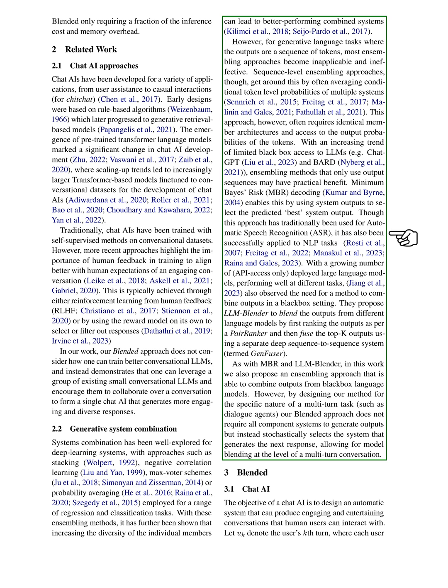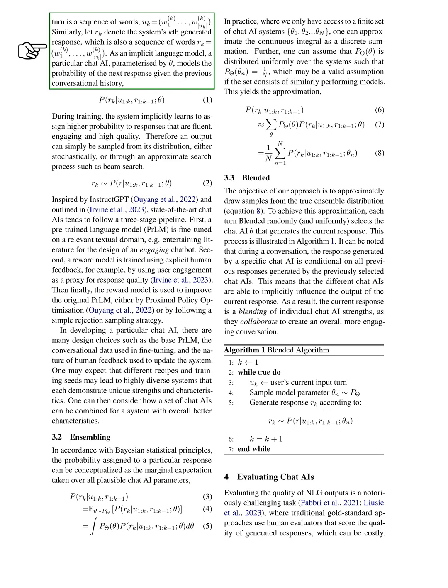Chat AI. We're going to talk about the creation of chat AI, or artificial intelligence designed for conversation. The goal here is to build an automated system that can generate engaging and entertaining discussions that people can interact with. We'll denote the user's Kth turn in the conversation as U_K, which is a sequence of words. Similarly, the system's Kth response is denoted as R_K, which is also a sequence of words. A specific chat AI, which we'll call theta, models the likelihood of the next response based on the previous conversation history.